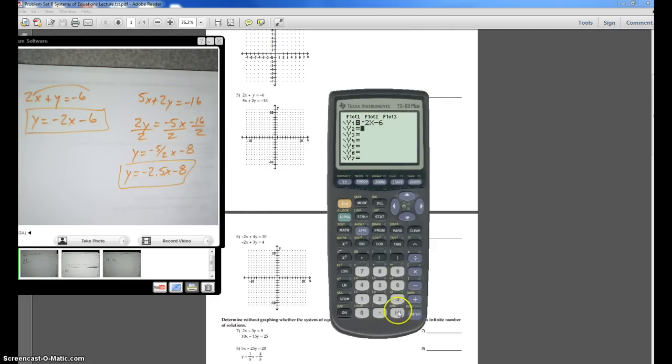The second one is negative 2.5x minus 8. Okay, so I've got my two equations here. I hit graph.